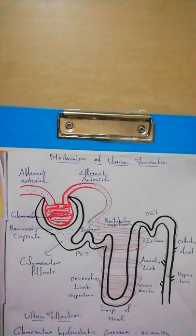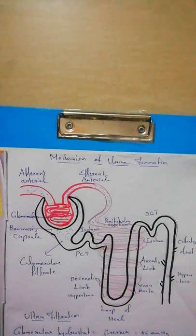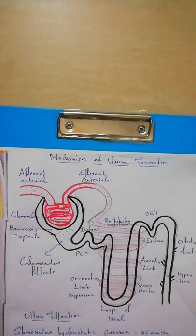Good morning students. We are passing through the chapter on excretion. In the previous session we discussed the structure of the human excretory system, which includes a pair of kidneys, a pair of ureters, urinary bladder, and urethra. We also discussed the major excretory organ — the kidney — and its structural and functional unit, the nephron.